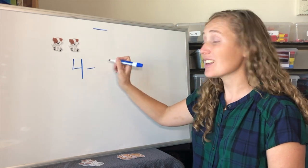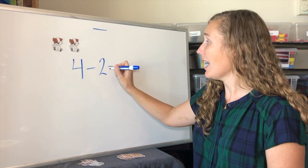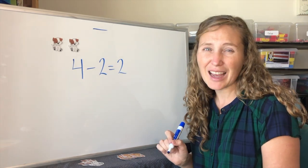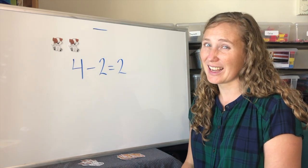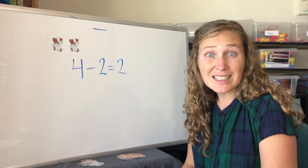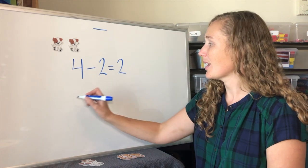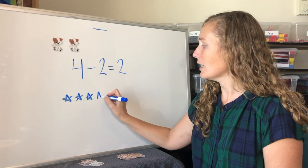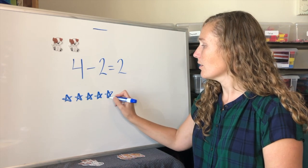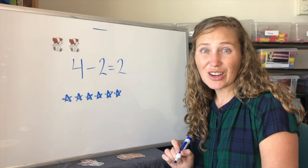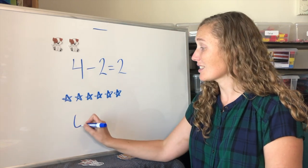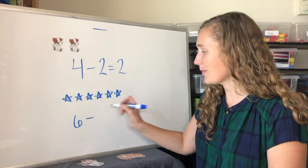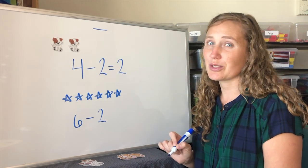We minus two of them and that equals two that are left. Let's try it with our stars again. We'll start with six stars. One, two, three, four, five, six stars. Six stars. Let's take away two of them. Two stars.